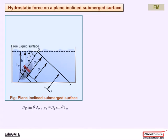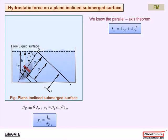Yp = Ixx / (A·Yc). By the parallel axis theorem, Ixx = Igg + A·Yc², where Igg is the moment of inertia of the surface about an axis passing through the centroid of the surface in mm⁴. Therefore, Yp = (Igg + A·Yc²) / (A·Yc), which simplifies to Yp = Yc + Igg / (A·Yc).